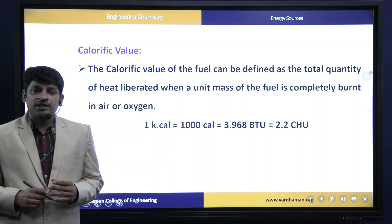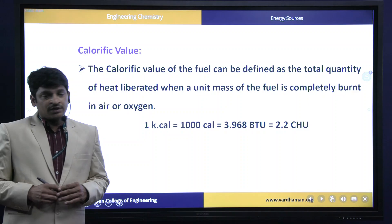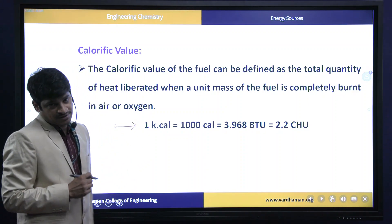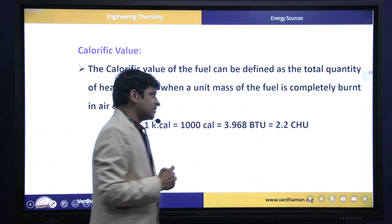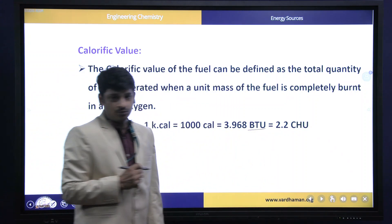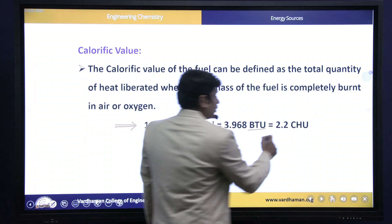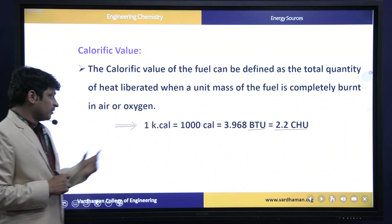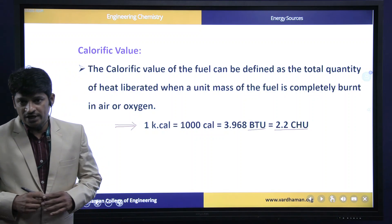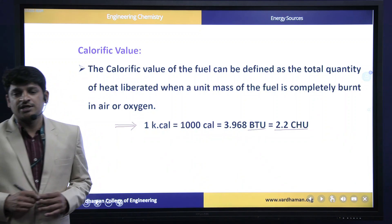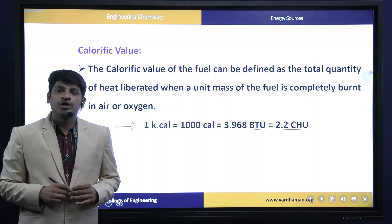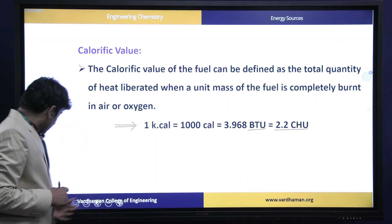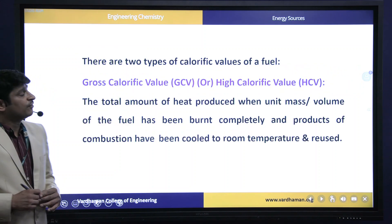Coming to calorific value: calorific value is defined as the total quantity of heat liberated when a unit mass of fuel is completely burnt in the presence of oxygen. The units are: 1 kilocalorie = 1000 calories = 3.968 British Thermal Units (BTU) = 2.2 Centigrade Heat Units (CHU). These are the unit relations for calorific value.